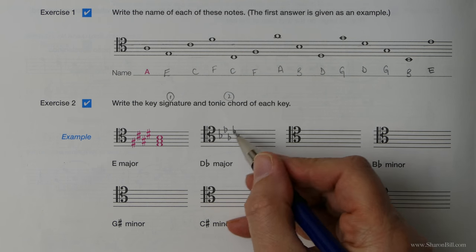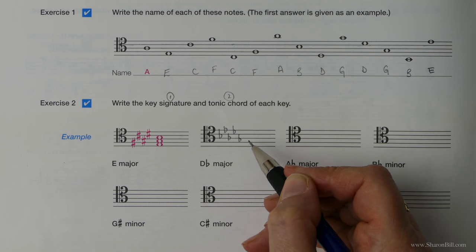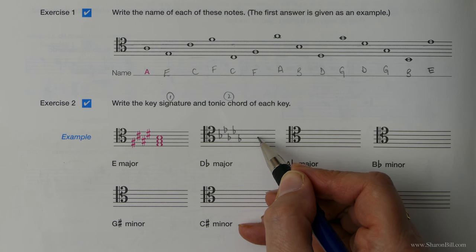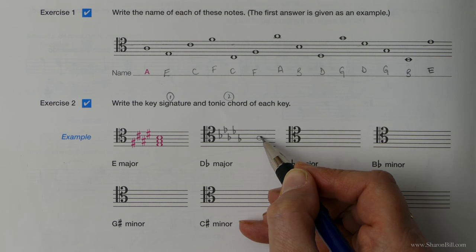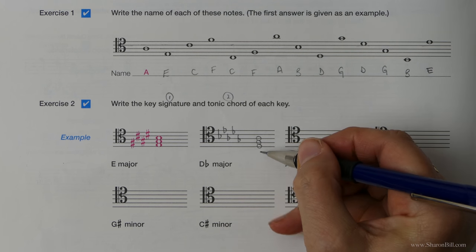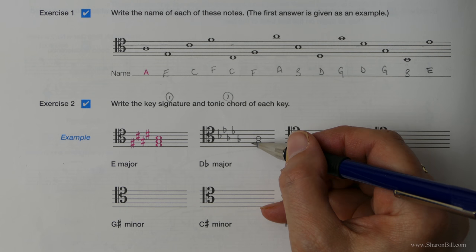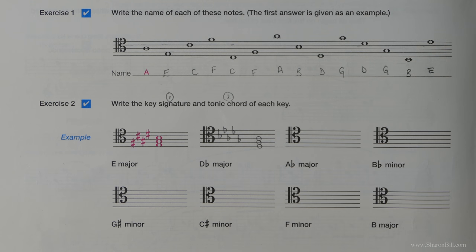And so now we need to write our triad: D, F, A. The flats will be taken care of by the key signature. So D, F, A. We know it's going to be C, B, A is our top note. Five, three, one. We could work it downwards. So let's just double check that. C, B, A, G, F, D. There we go.